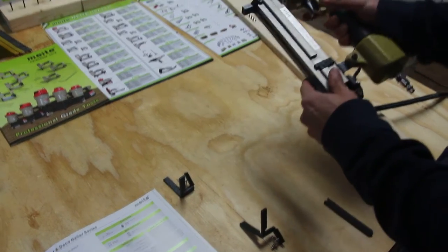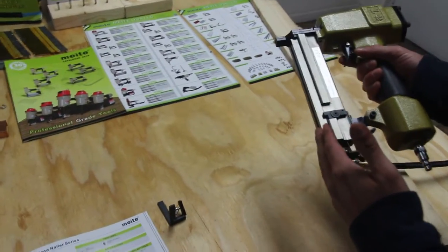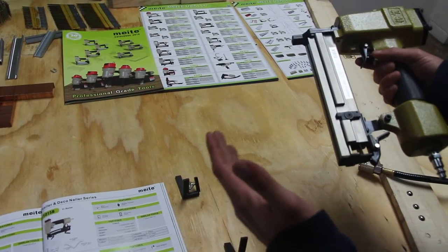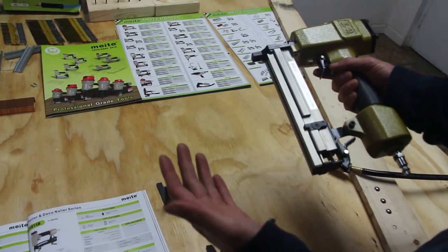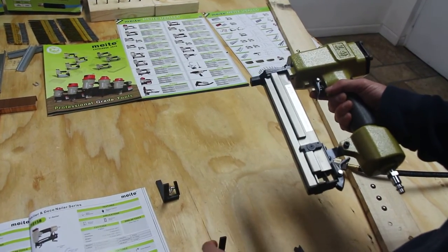Alright guys, now we have the V-nailer here. Before we get into the demonstration, I'm going to show you the gun comes in a couple different pieces. This is the way it's supposed to look before we use it.